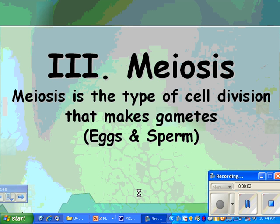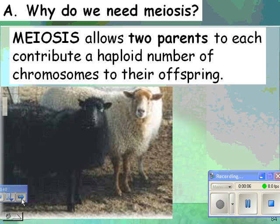Meiosis is the type of cell division that makes gametes, which are egg and sperm. So why do we need meiosis? Meiosis allows two parents to each contribute a haploid number of chromosomes to their offspring.